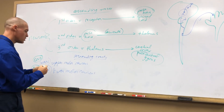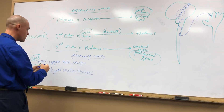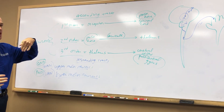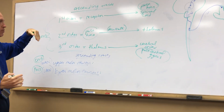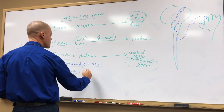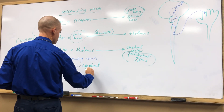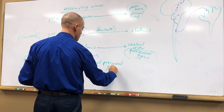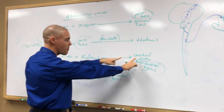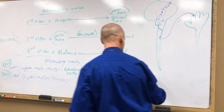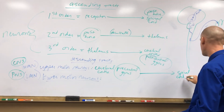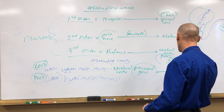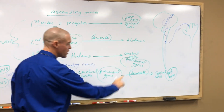Where do the upper motor neurons go? We're motor now, so we're going down — starting from the opposite end compared to sensory. Upper motor neurons are going to go from the cerebral cortex, specifically the pre-central gyrus, which is our primary motor region, down to the spinal cord — specifically the anterior horn. This pathway is also going to decussate.